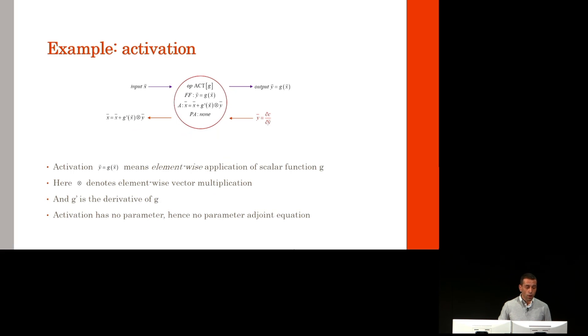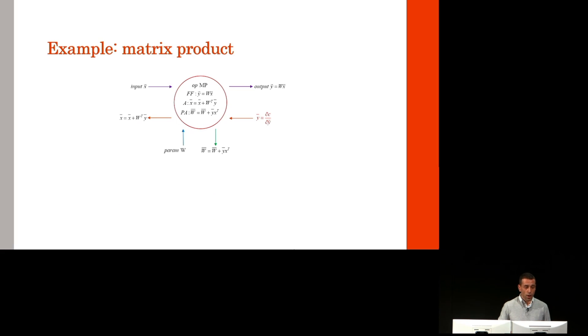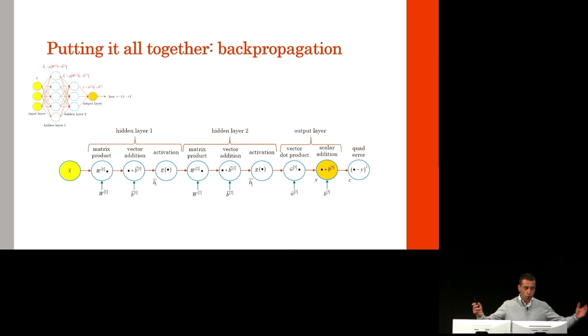Examples of ops include activation, vector addition, or matrix product. Bringing them all together, we get the backpropagation algorithm, which is a very powerful algorithm.